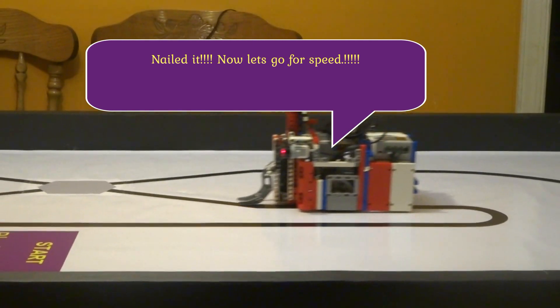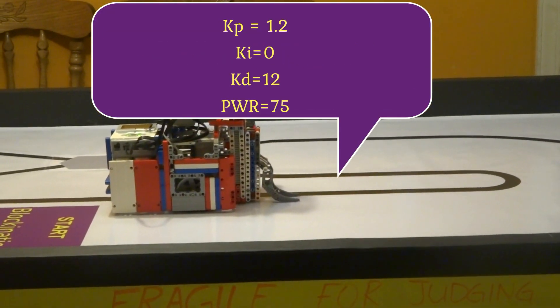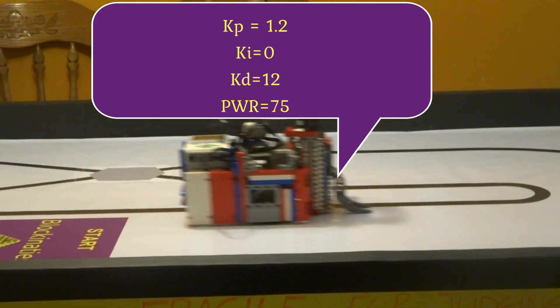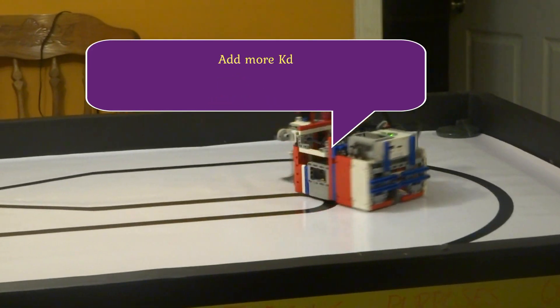Nailed it. Now let's go for more speed. Let's start with a KP of 1.2 and a KD of 12 at 75 power.